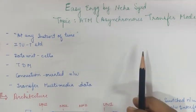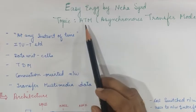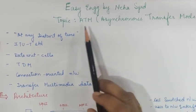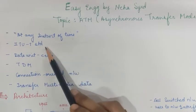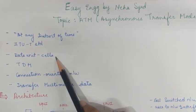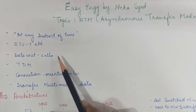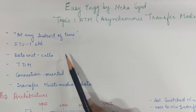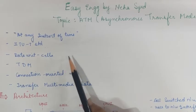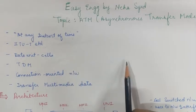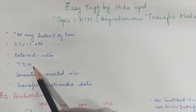Welcome back to Easy Engineering by Neha Syed. In this lecture we are going to see Asynchronous Transfer Mode, that is ATM. It is a most widely used technology as it transmits data at any instant of time, and it has been adopted by the ITU telecommunication standard. The data transmission unit for ATM is a cell — it encodes data into small fixed-size cells, also called frames, but the data unit here is specifically called a cell.